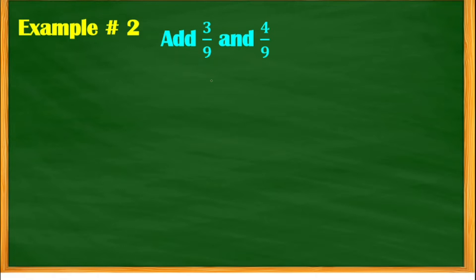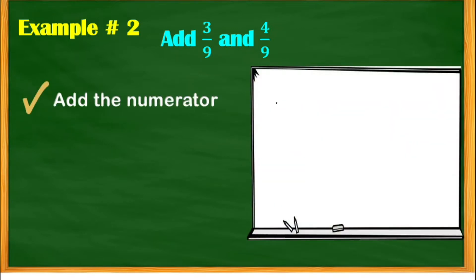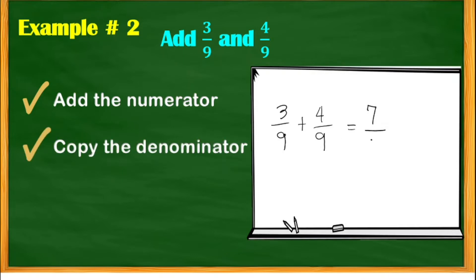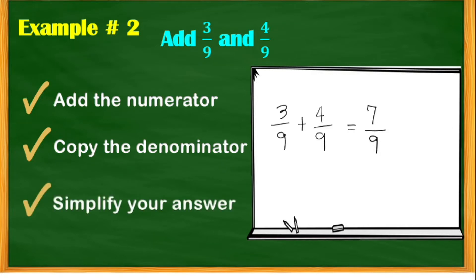Let's proceed to example number 2: 3/9 added by 4/9. These are similar fractions. First, add the numerators: 3 plus 4, the answer is 7. Then copy the denominator, which is 9. Simplify your answer — 7/9 is already expressed in simplest form because there is no common factor between the numerator and denominator except 1.